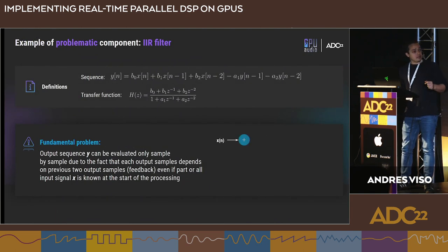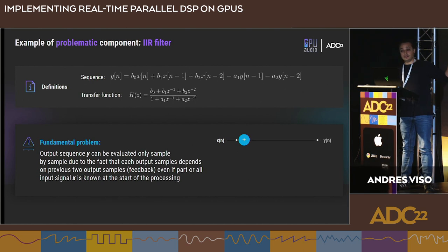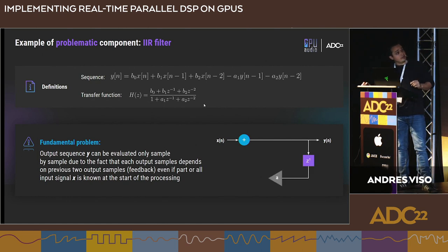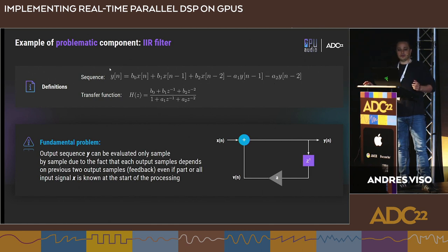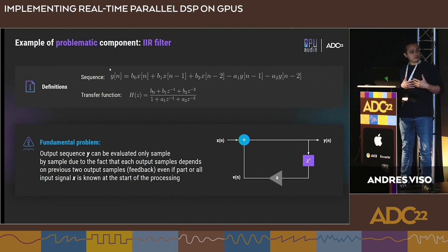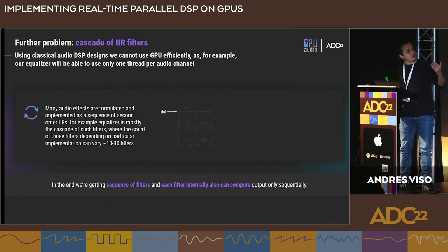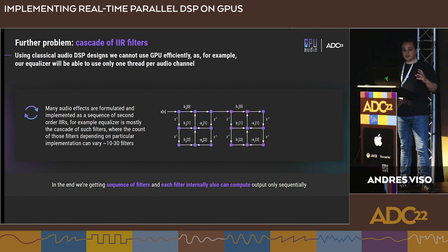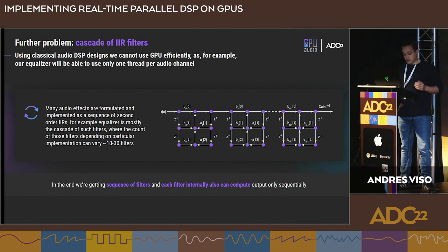The IIR filter case is not as happy. The problem is data dependency: to compute a given output position, we need the previous two positions — the filter coefficients are codified between the B's and A's, with X as input. There's no parallelism possible because we must process the buffer sequentially. The problem goes further: the typical use case has a cascade of filters executing one after another, creating even more sequential processing.